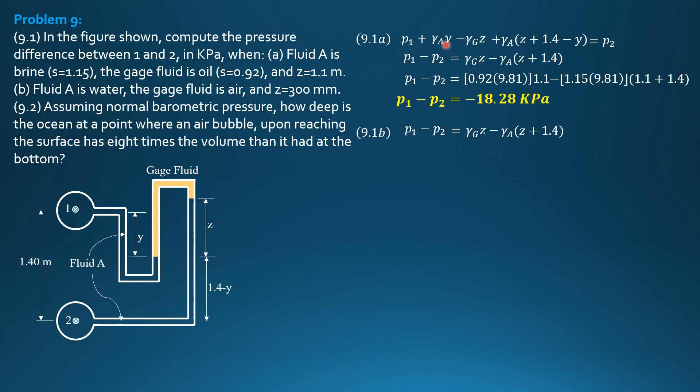So, again, same result because we can cancel gamma of A times Y. And, this is the simplified form. We just set gamma of gauge liquid 0 here because it is air. The gauge fluid is air. So, P1 minus P2 equals 0 times 0.3 minus 9.81 times quantity 0.3 plus 1.4. So, the difference in pressure between 1 and 2 is negative 16.68 kilopascals.